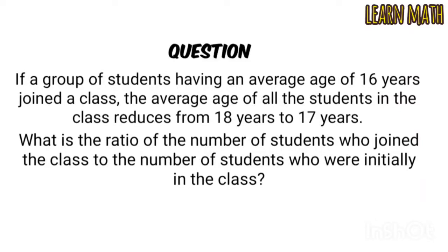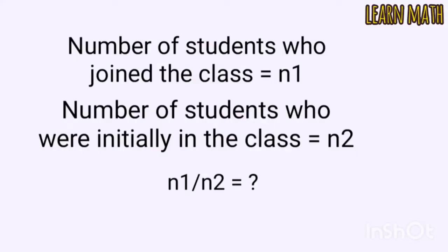What is the ratio of the number of students who joined the class to the number of students who were initially in the class? Let the number of students who joined the class be equal to n1, and the number of students who were initially in the class be equal to n2. We have to find the ratio of n1 to n2.